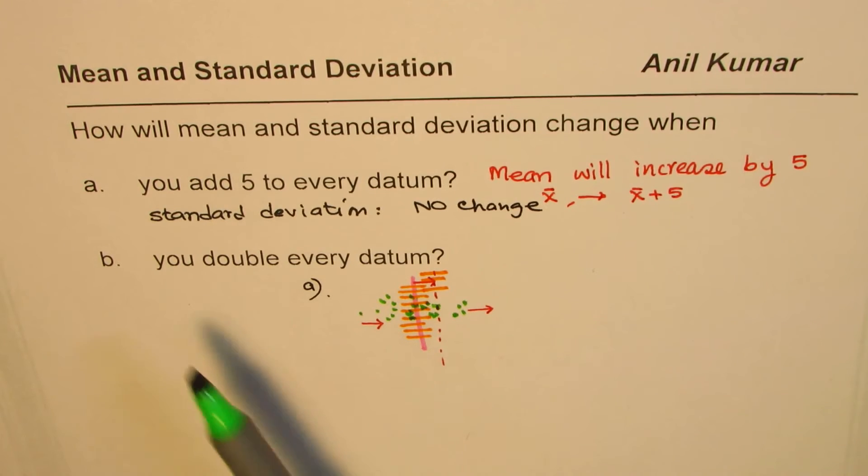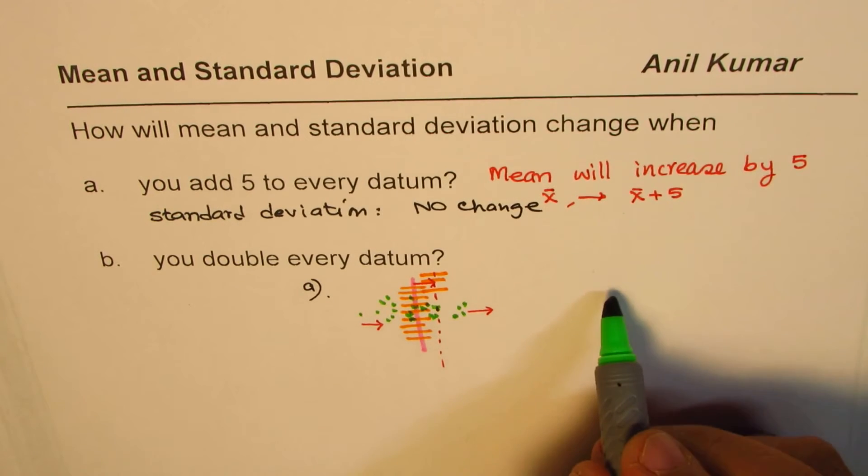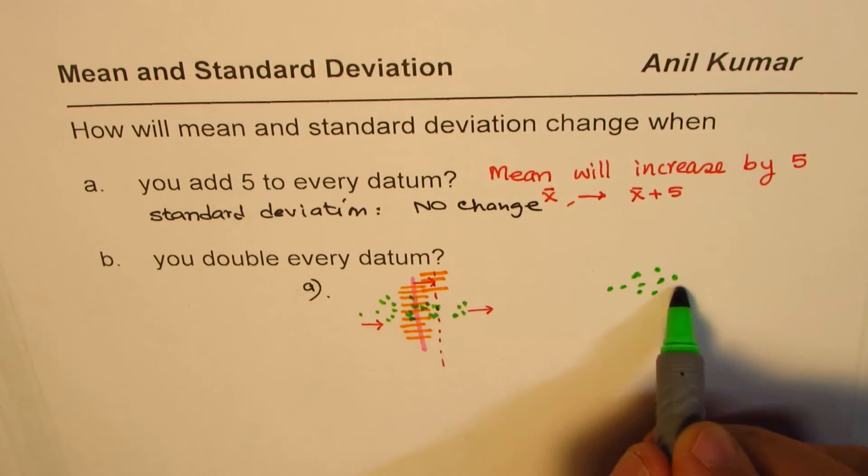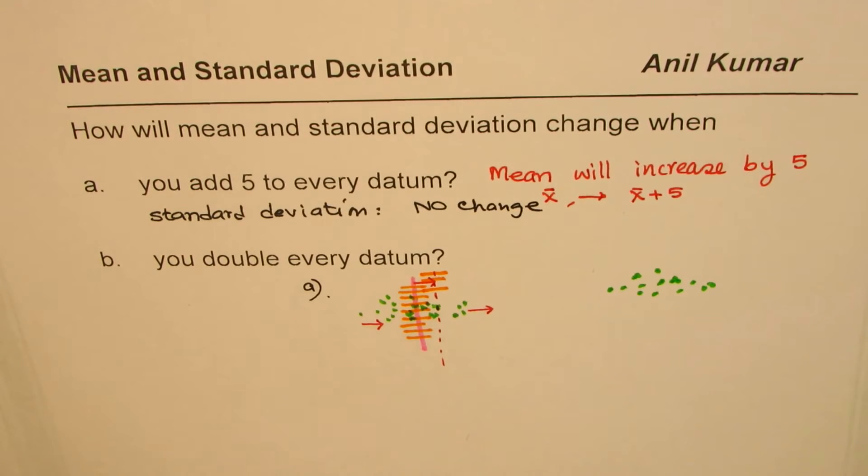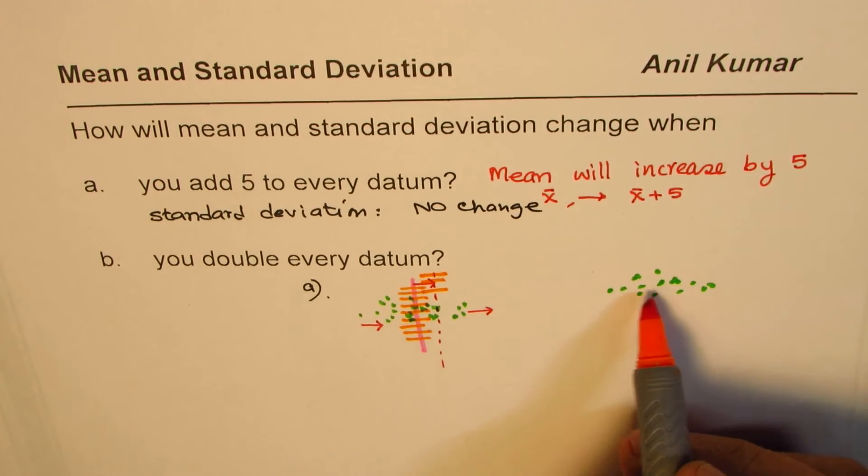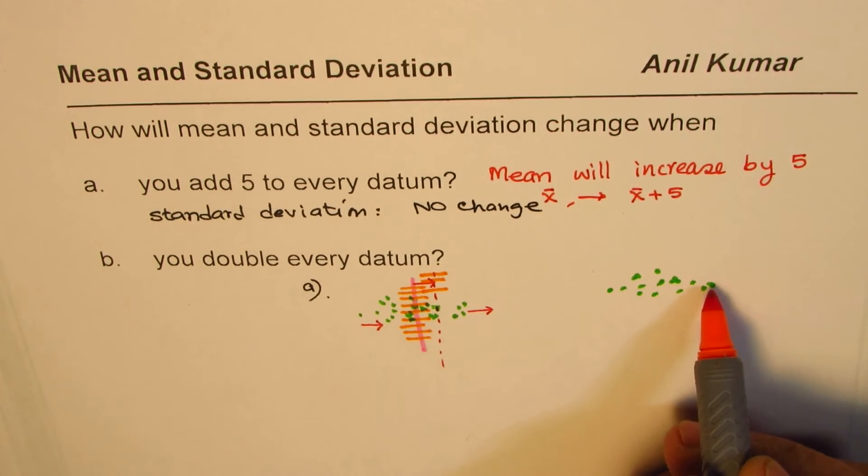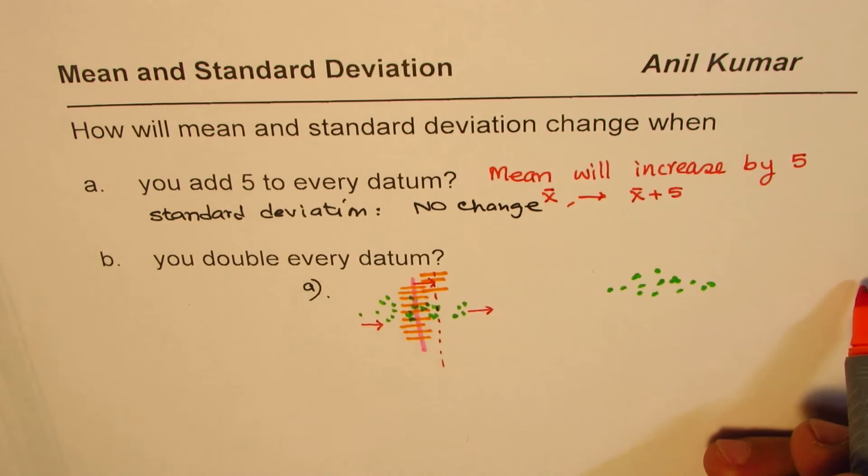Now let us see what happens when you double the data. So let's say this is the kind of data we have. Now if we double the data, all these values - let's say this is at 1, it comes at 2, and let's say this is 100, it will go to 200. So in that case, the data will kind of spread like this.